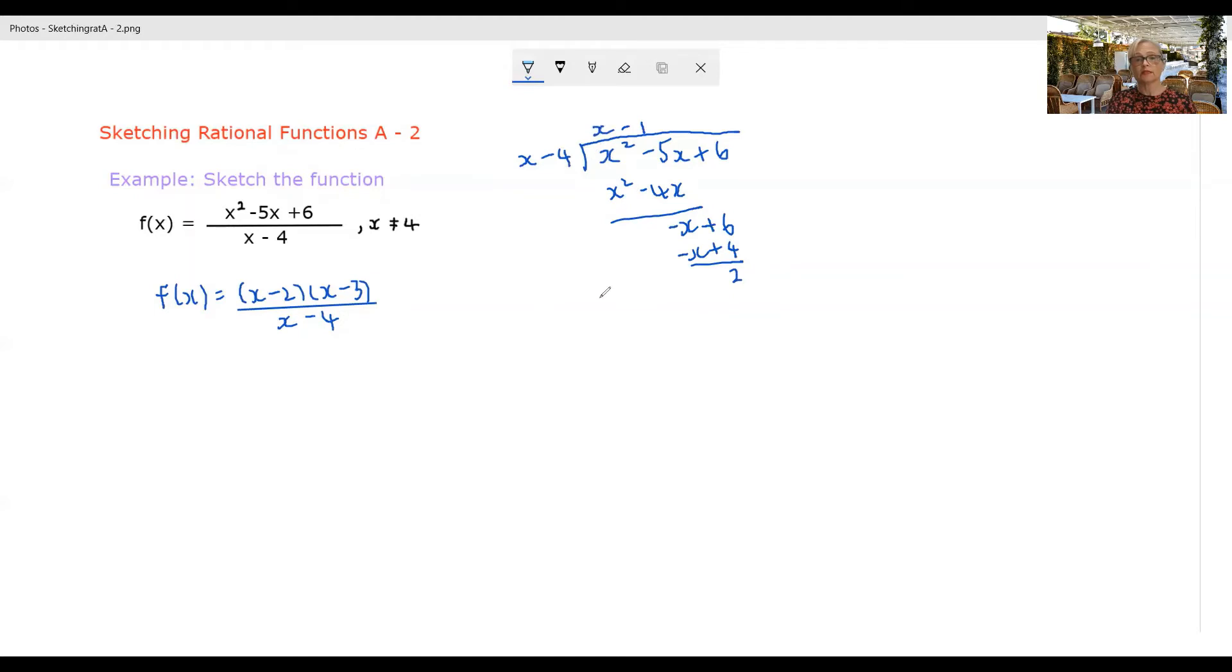So by doing that division, we have found that another version of our function is that f of x is x minus 1 plus 2 over our x minus 4. We could even give that in yet another version that will sort of wrap it up with a bow already for our differentiation stage.